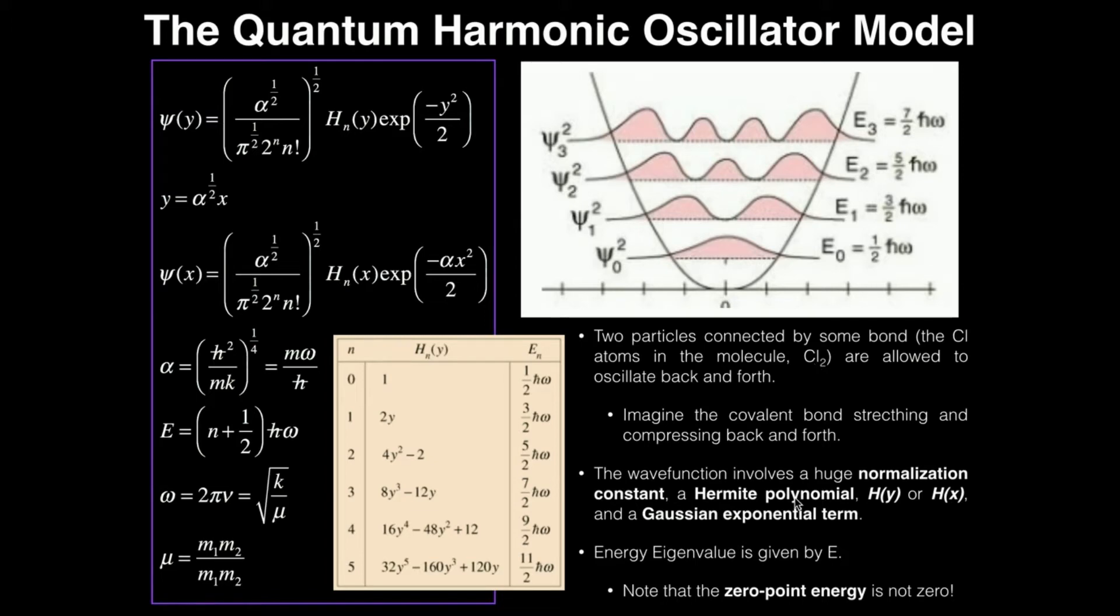So the main thing to understand is this wave function is the product of three components. The first part, I basically mean complicated normalization constant. That's this whole thing in parentheses raised to the one-half power. Alpha is a number we just calculate. Pi is pi. Then we have two to the n times n factorial. The n here is really just zero or any integer value. So zero, one, two, three, four, and so on and so forth. And you would be given that in the problem.